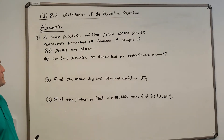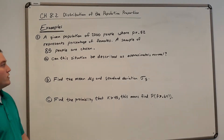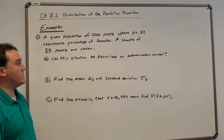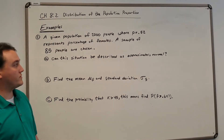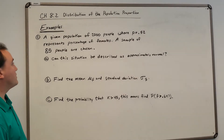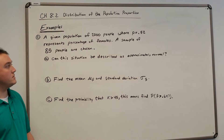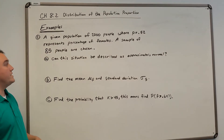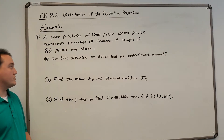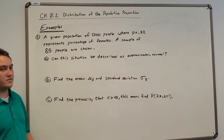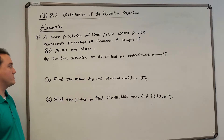A given population of 2,000 people, where p equals 0.52 represents the percentage of females. A sample of 85 people are chosen. Okay, so that's our situation.